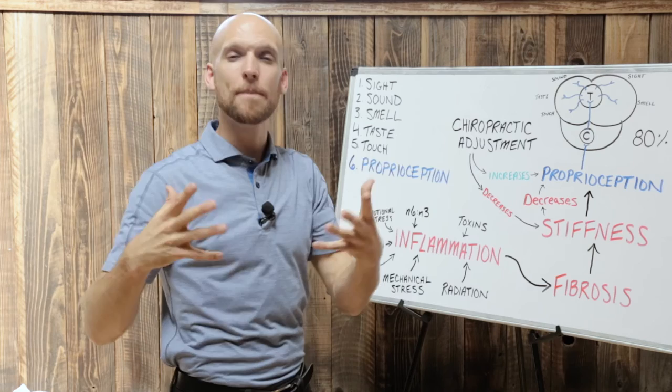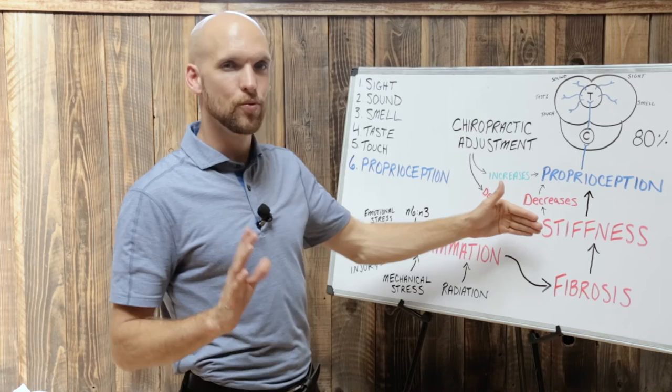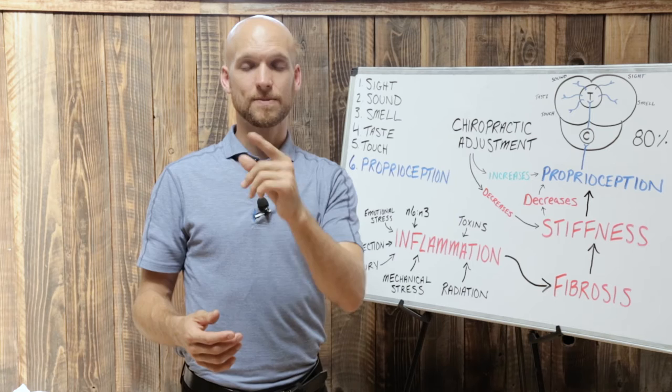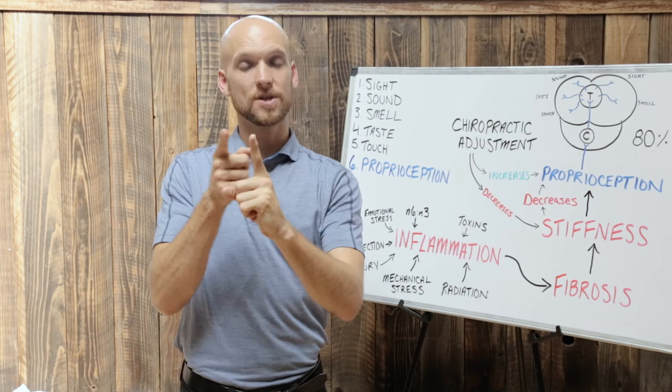So the chiropractic adjustment is a very unique mechanism that comes in and removes or decreases stiffness so that you can get proprioceptive feedback back to the brain. How it does this is there is something called active range of motion, which is basically I can take my finger and actively move it to the end range. Then there's passive range of motion, which means I can take my finger and move it to its passive range of motion.